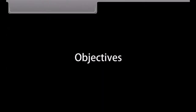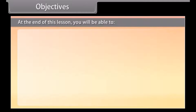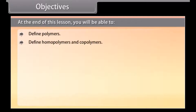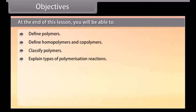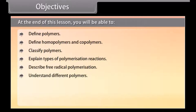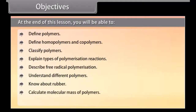Objectives: At the end of this lesson, you will be able to define polymers, define homopolymers and copolymers, classify polymers, explain types of polymerization reactions, describe free radical polymerization, understand different polymers, know about rubber, calculate molecular mass of polymers, and define biodegradable polymers.